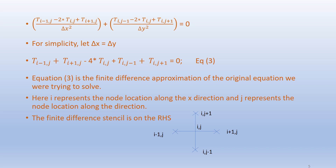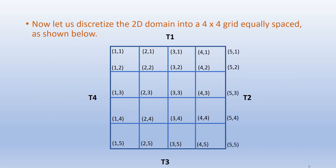Equation 3 is the finite difference approximation of the original equation we were trying to solve. Here i represents the node location along the x direction and j represents the node location along the y direction. The finite difference stencil is shown on the right side. From equation 3 we can conclude that the temperature at the center node is the average of the temperatures at the four surrounding nodes.